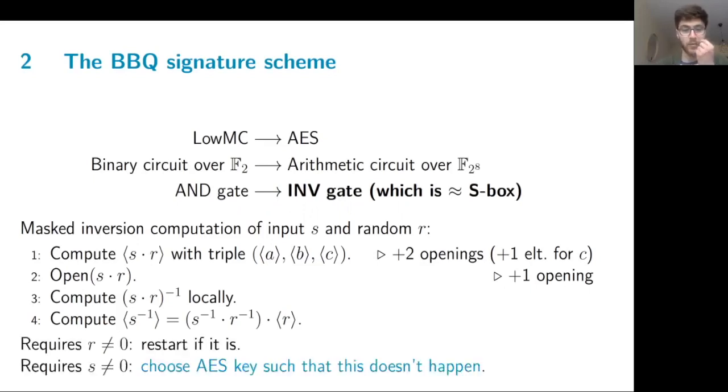This technique has two drawbacks. The first is that it requires the randomness to be non-zero. Since it's random, this happens with little probability, and the parties simply restart if that happens. The other drawback is that it requires the input to be non-zero, and this is where we modify the key generation of AES to simply state that the plaintext X, the block cipher, and the key W should be chosen such that this never happens. In practice, this only reduces concrete security by one to three bits.